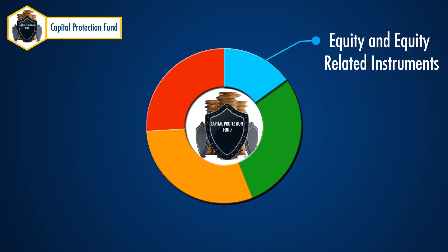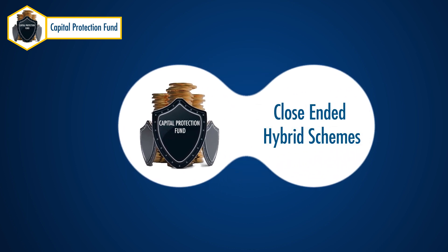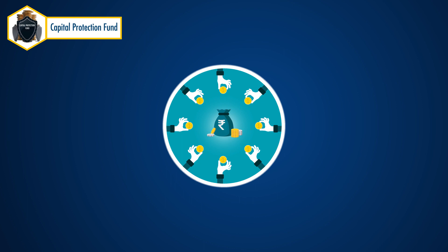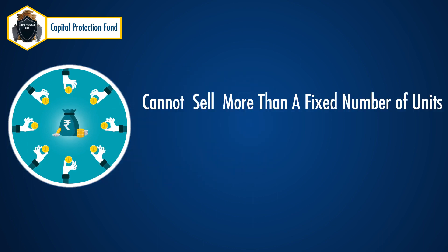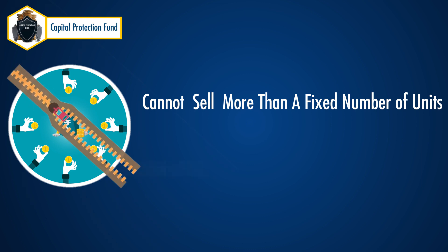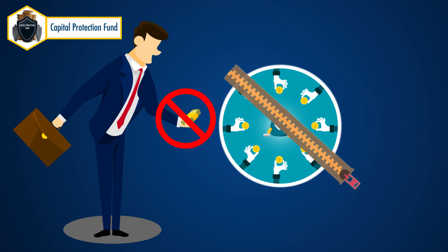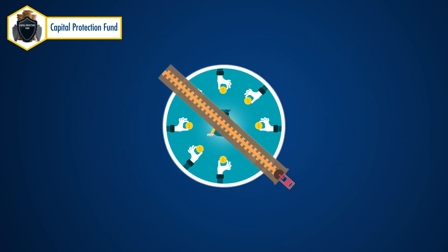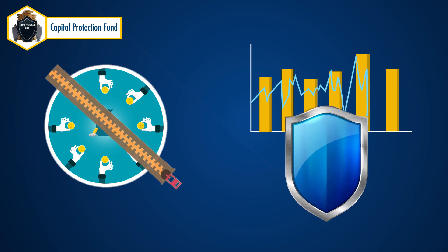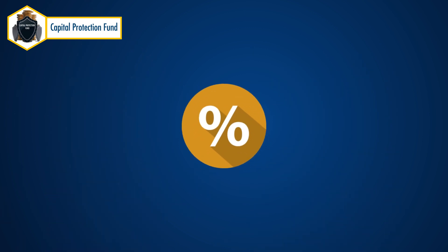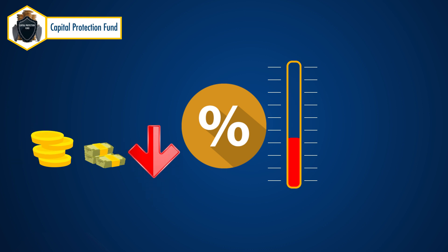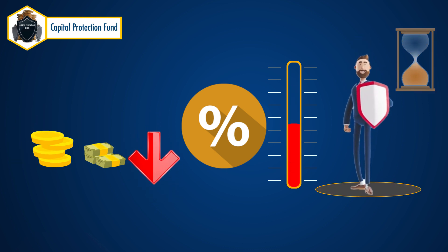You should remember that capital protection funds are close-ended hybrid schemes. This means that the mutual fund company cannot sell more than a fixed number of units. Such funds also have a lock-in period, so an investor cannot invest or exit this fund at any time — one can only invest during the new fund offer period. The lock-in period ensures the fund remains immune to volatile interest rate movements, meaning any losses due to interest rate fluctuations are averted as the assets are held till maturity.